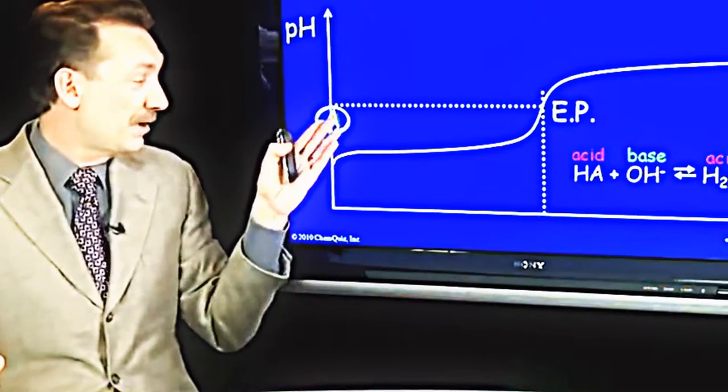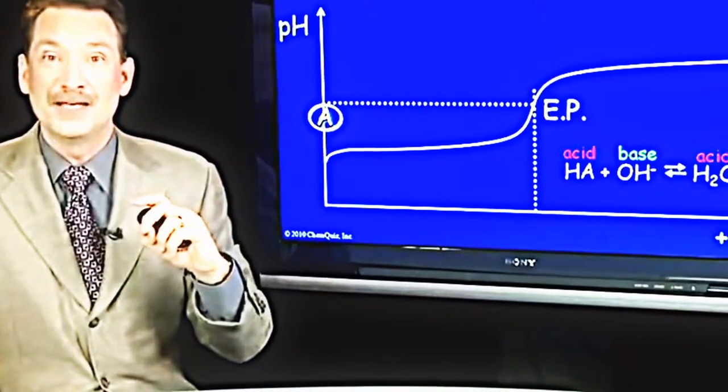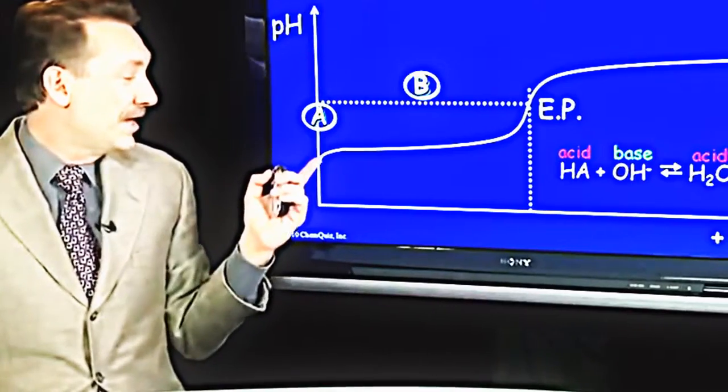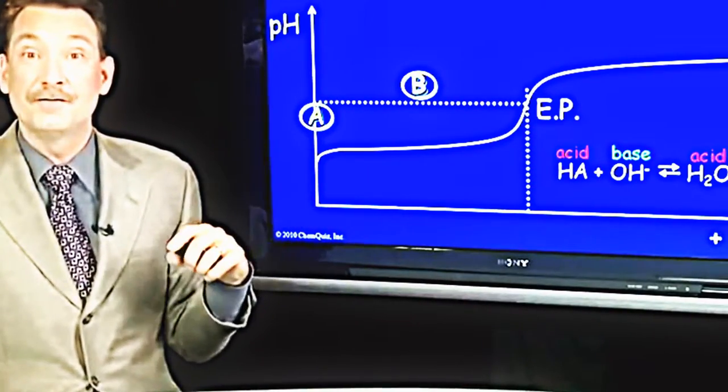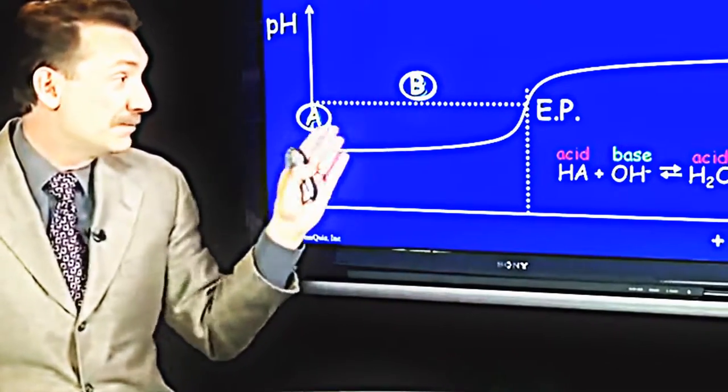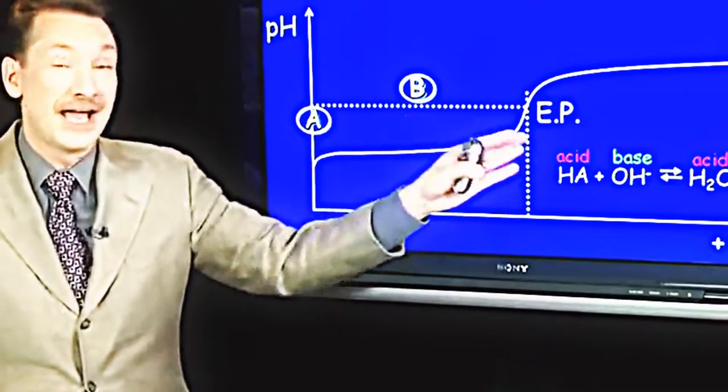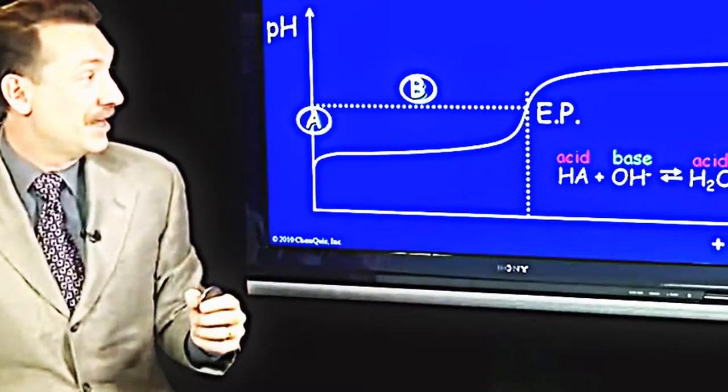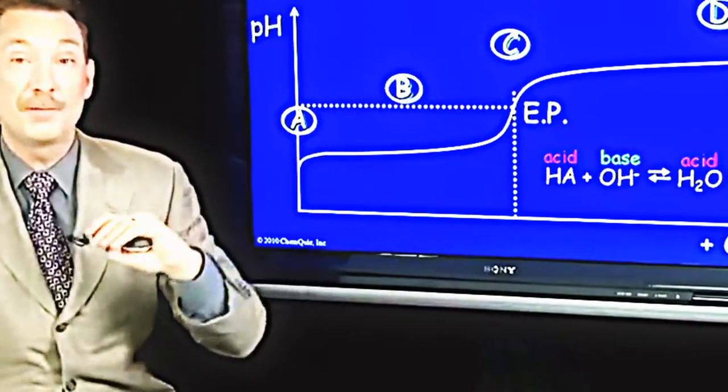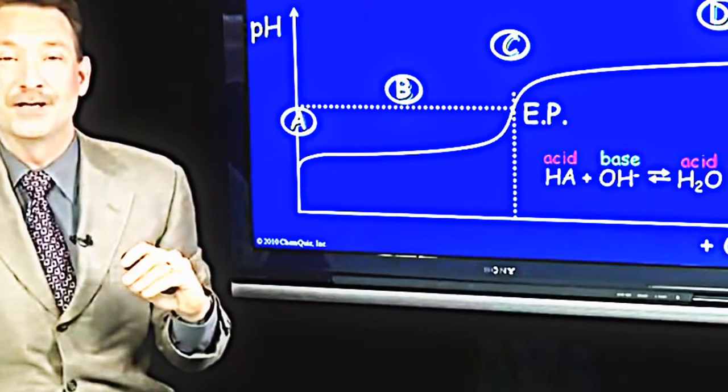But we can also talk about point A, the beginning of the titration, the initial point. That's when I have simply a solution of the weak acid. I haven't added any base yet. Here, point B right in between the initial and the endpoint. We can look at point C right at the endpoint and then well beyond the endpoint.